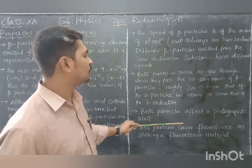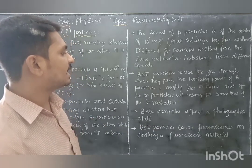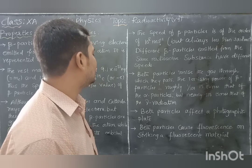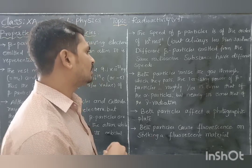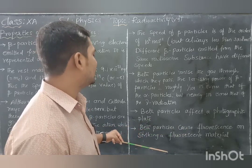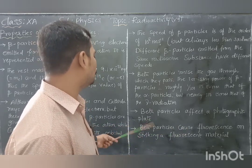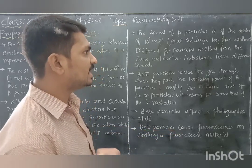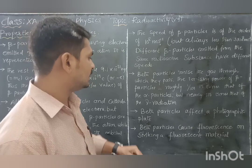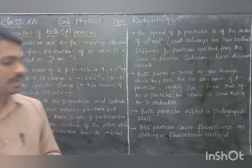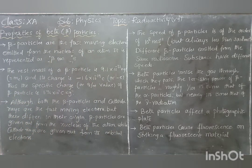Beta particles affect a photographic plate — if they touch the photographic plate, it will capture and produce an image. Beta particles also cause fluorescence, meaning at low temperature they emit light when striking a fluorescent material.